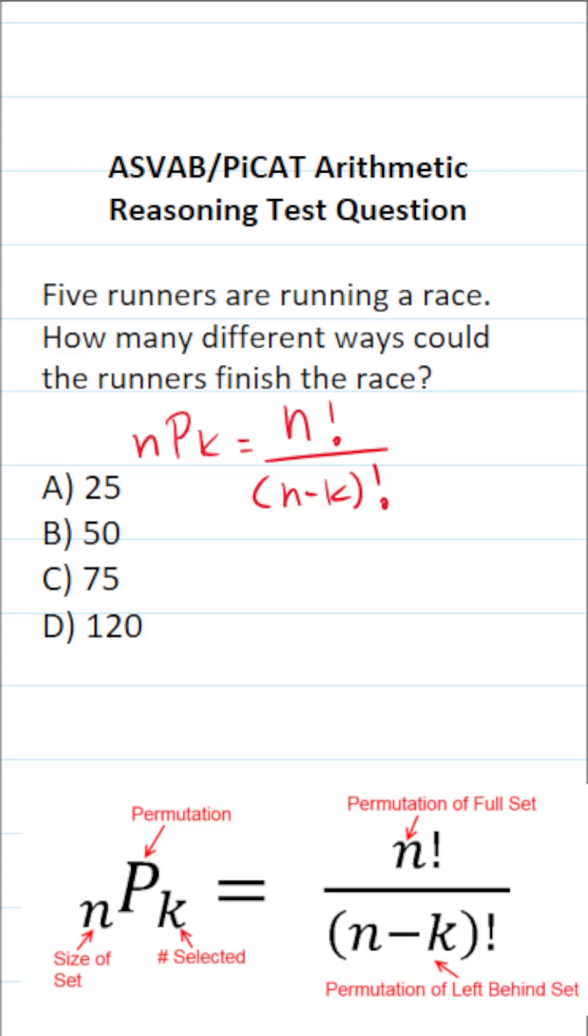Now, as it happens, n is the total number of people in this race. Well, we know that only five people ran in this race, so n is going to be five. And k is the order in which they finish the race. That's what we're interested in. And likewise, we're concerned about the order in which all five people finish this race. So k is also going to be five.